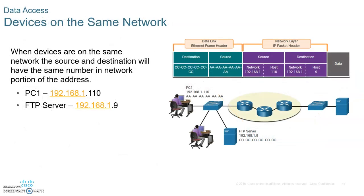Devices on the same network must have the same network portion of the IP address. Remember when we configured the switch and the PC in chapter two — the switch had the IP address 192.168.10.1 and the PC had 192.168.10.2. The first three numbers had to be the same, meaning they are on the same network. That's a standard: everybody in the same LAN must have the same network portion of the IP address.